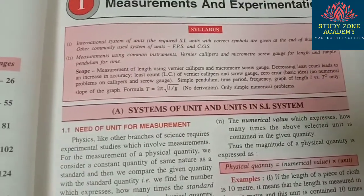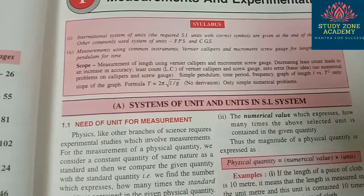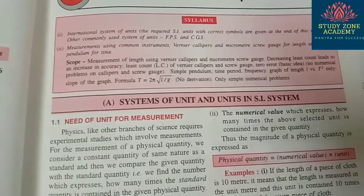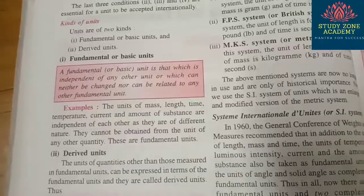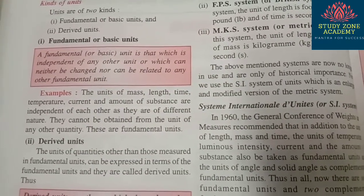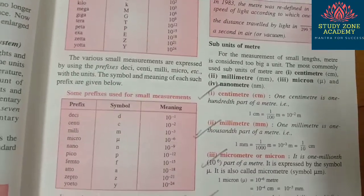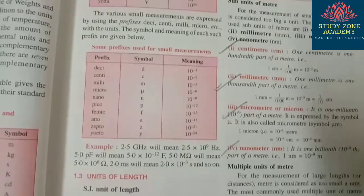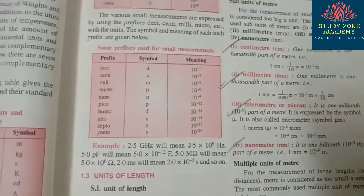From this chapter you can expect questions like the definition of physical quantity, its formula. Physical quantity equals numerical value into unit. Also the differences between fundamental or basic units and derived units, their definitions along with examples, and the unit of meter and multiple units of meter.